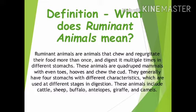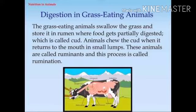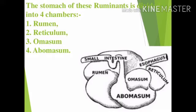Our next topic is nutrition in ruminants. What are ruminants? Animals that chew and regurgitate their food are called ruminants. They are mostly herbivores which eat grass, like cow, buffalo, goat, sheep, and bison. These animals swallow the grass and store it in the rumen, where it is called cud. They chew the cud when it returns to the mouth. This process is called rumination. These animals digest cellulose, which is a major component of the food eaten by herbivores. Plant-eating animals digest their food in two steps — first, half-chewed food is swallowed; then, when cellulose is digested, it comes back to the mouth where the animals chew it again.